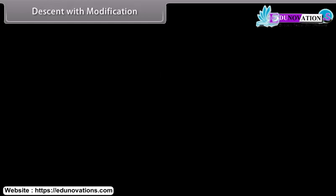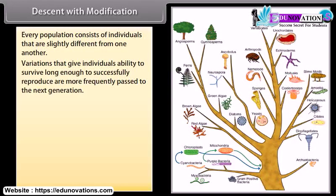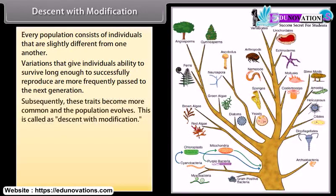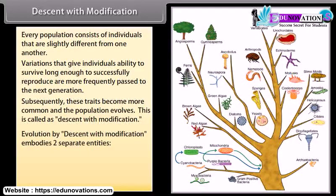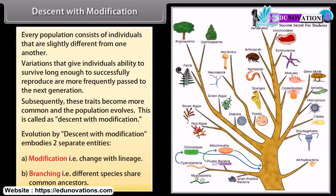Every population consists of individuals that are slightly different from one another. Variations that give individuals the ability to survive long enough to successfully reproduce are more frequently passed to the next generation. Subsequently, these traits become more common and the population evolves — this is called descent with modification. It embodies two entities: A. Modification — change within a lineage, and B. Branching — different species share common ancestors.